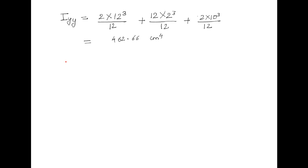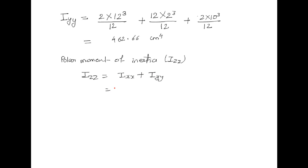Now we have the values of both Ixx and Iyy, so we can find out the polar moment of inertia. The polar moment of inertia Izz = Ixx + Iyy = 2495.25 + 462.66, so the final value of Izz = 2957.91 cm⁴.